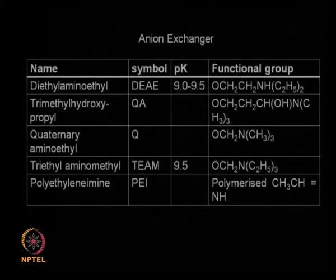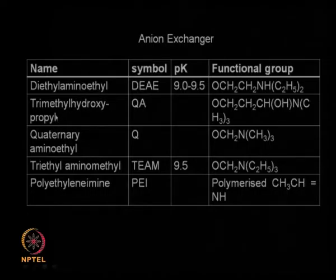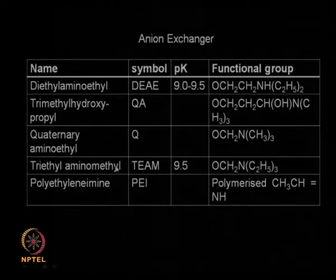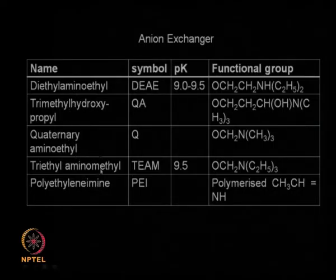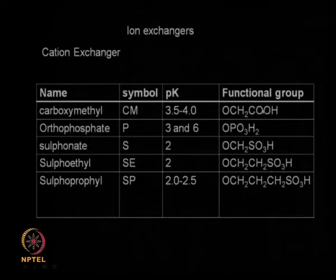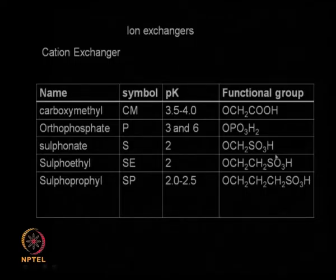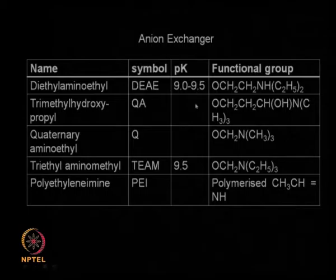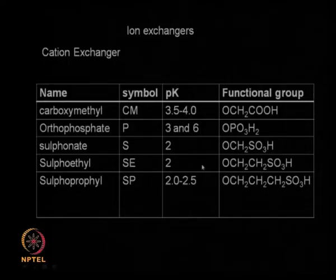For anionic exchangers, we can use diethyl amino ethyl, trimethyl hydroxypropyl, quaternary amino ethyl, triethyl amino ethyl, and polyethylene amine. Notice that nitrogen-containing groups are present in most of these, giving the positive N+ charge. In contrast, the cation exchanger groups have OH-type groups giving a negative charge. The pK values for anion exchangers are on the basic side, while cation exchangers are more on the acidic side.